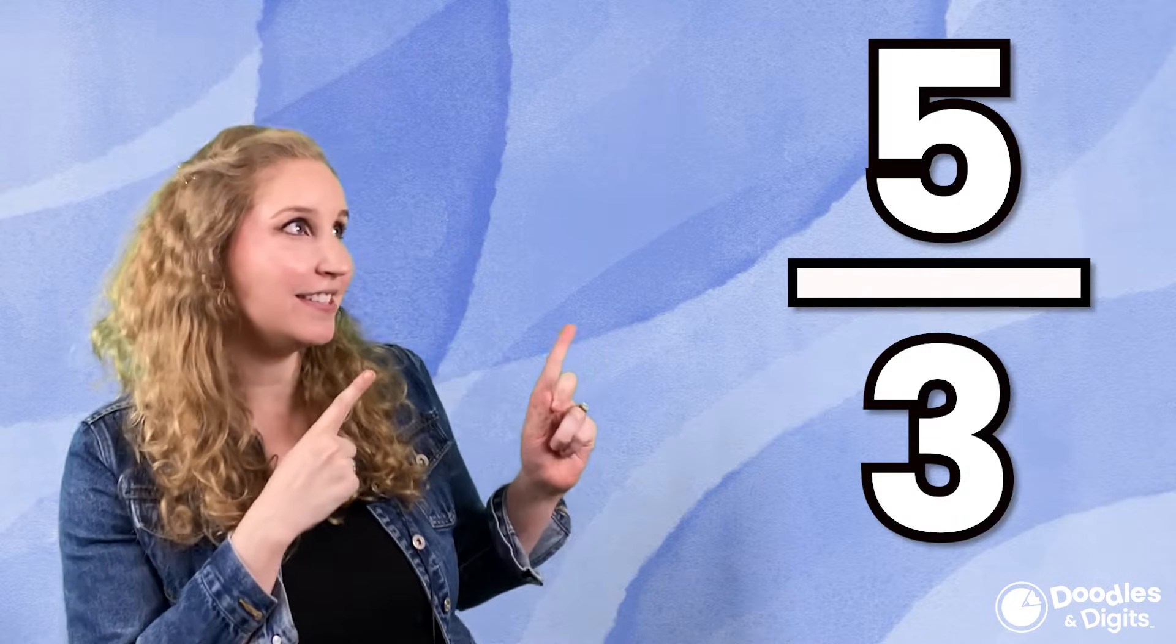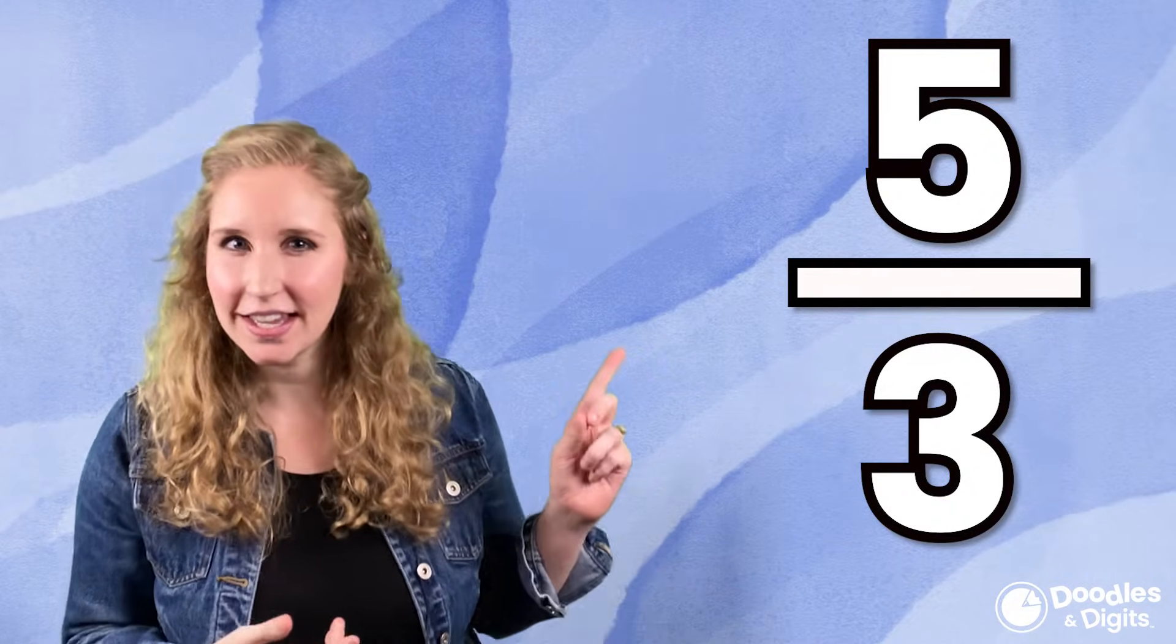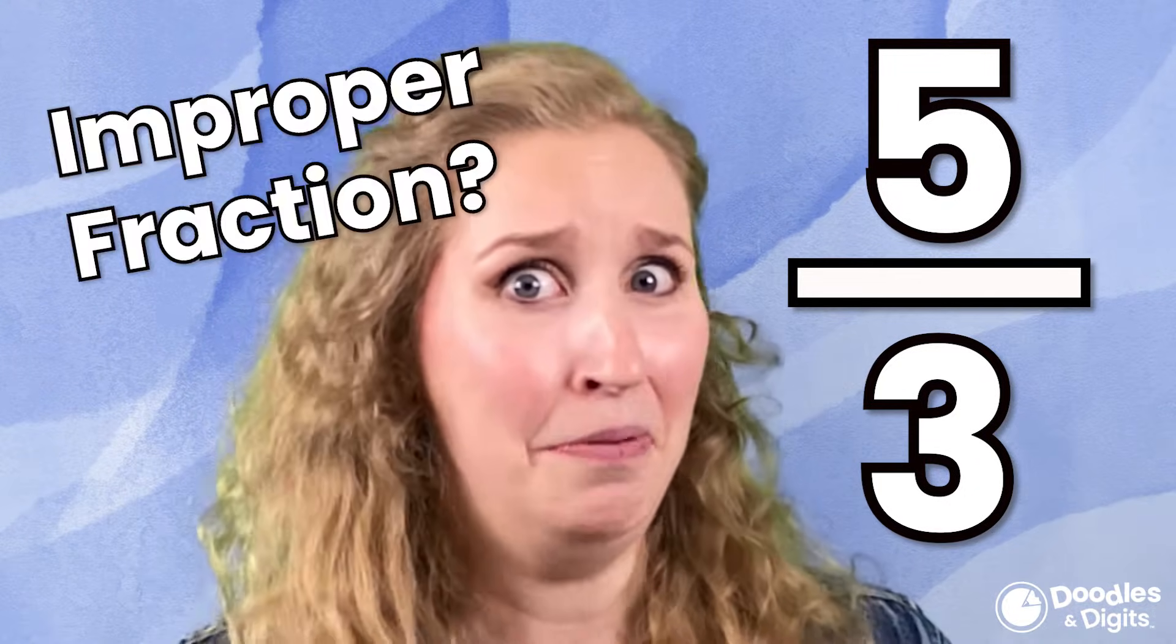Hi, I'm Caroline from Doodles and Digits, and today we're going to be talking about numbers that look like this. Have you ever seen a number that looks like this? This is called a fraction greater than one, or some people call it an improper fraction.